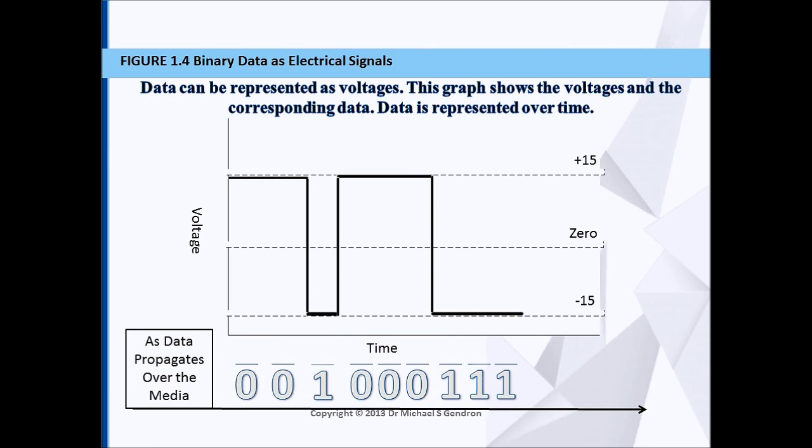As you can see, plus 15 represents zero, and minus 15 represents one. These data are broken up into even time slots, which allow the receiving host to recreate the data based upon the known standards of the length of time and the voltage that is used to represent each bit.